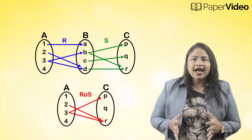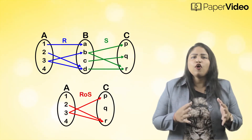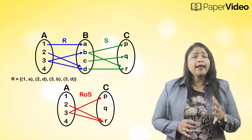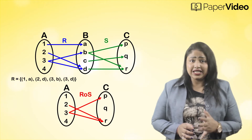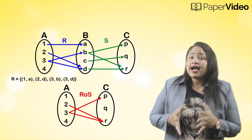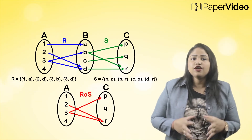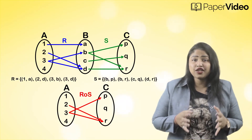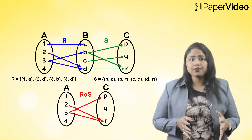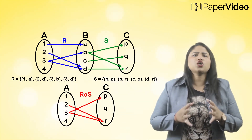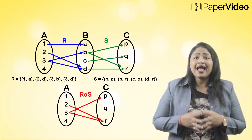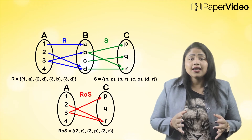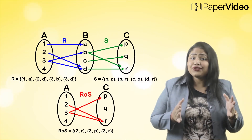The composition of relation R and S is written as R∘S. Relation R is the set of ordered pairs {(1,A), (2,D), (3,B), (3,D)}, and relation S is the set of ordered pairs {(B,P), (P,R), (C,Q), (D,R)}. So the composition R∘S is the set of ordered pairs {(2,R), (3,P), (3,R)}.